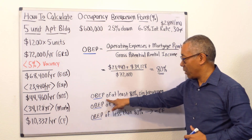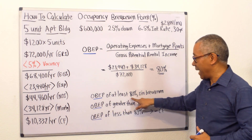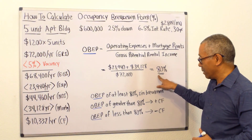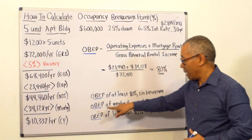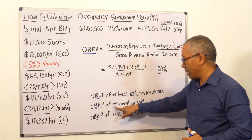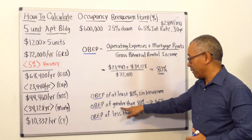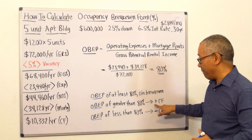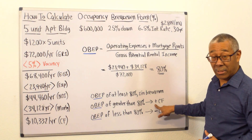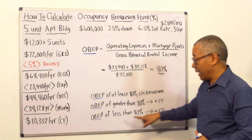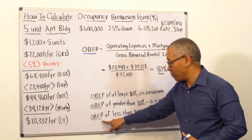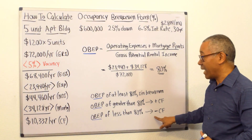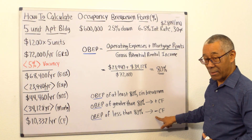In summary: an occupancy break-even point of exactly 80% means I'm breaking even. Occupancy greater than 80% means I'm positive cash flow. Occupancy less than 80% means I'm negative cash flow.